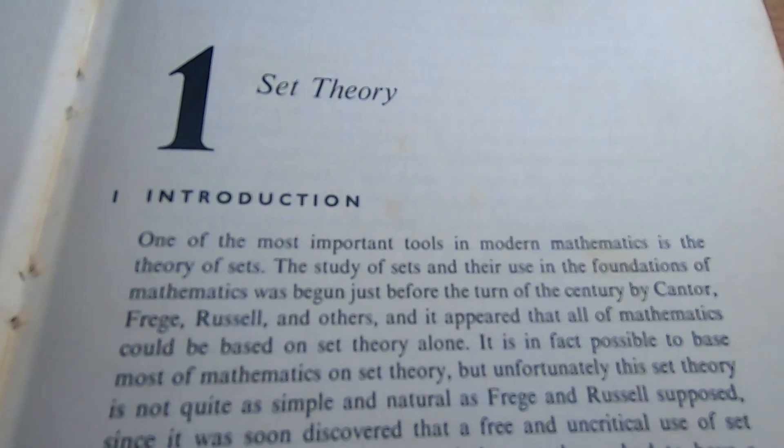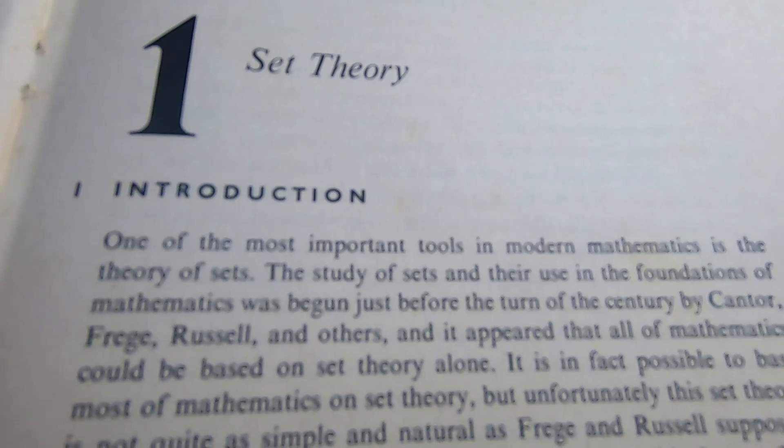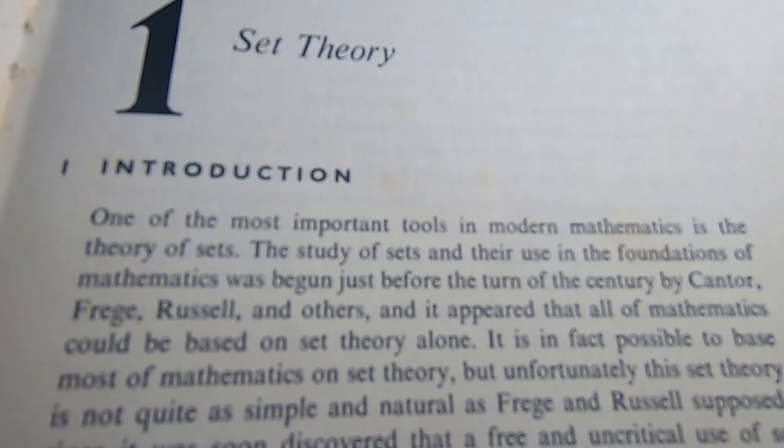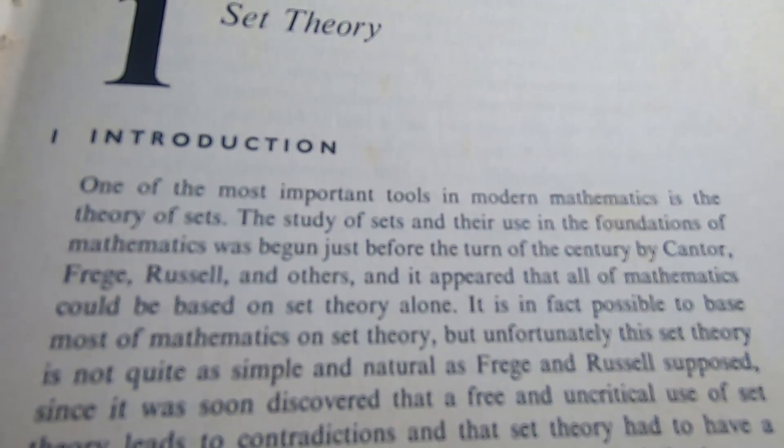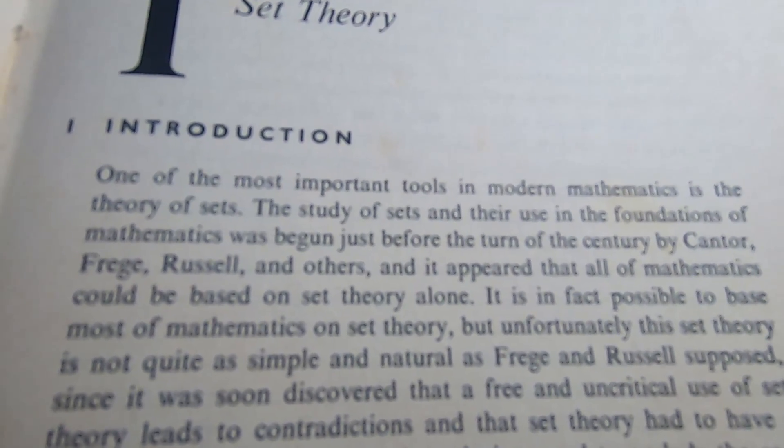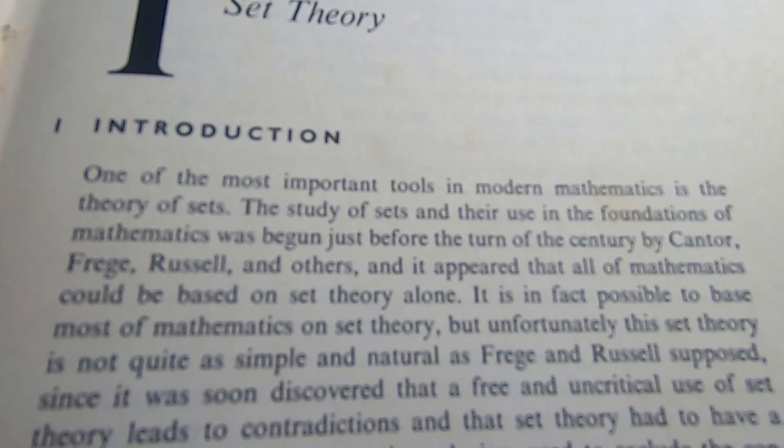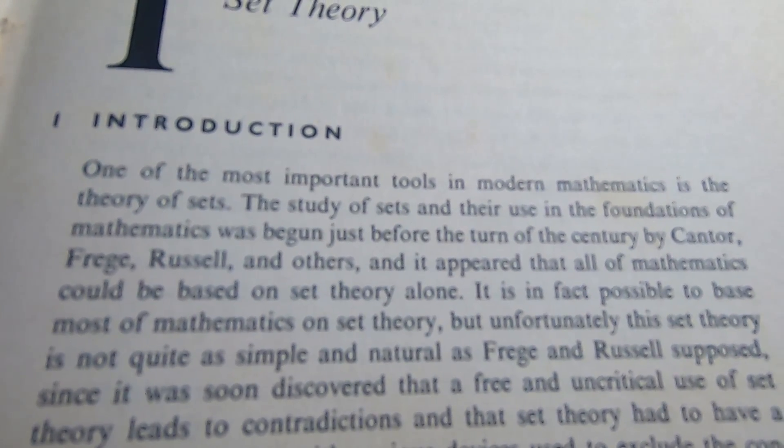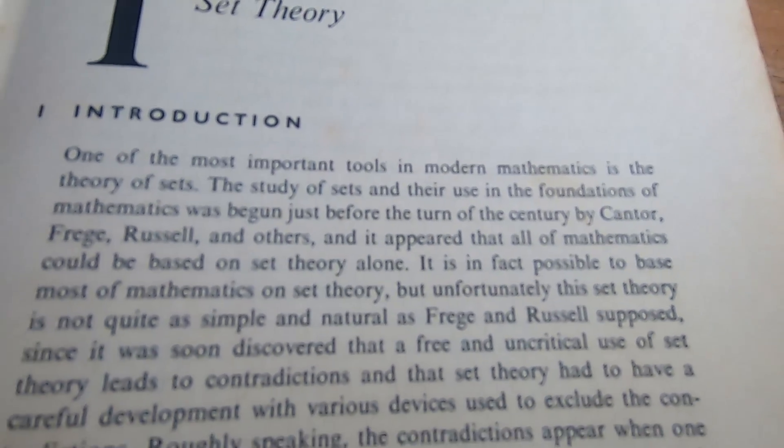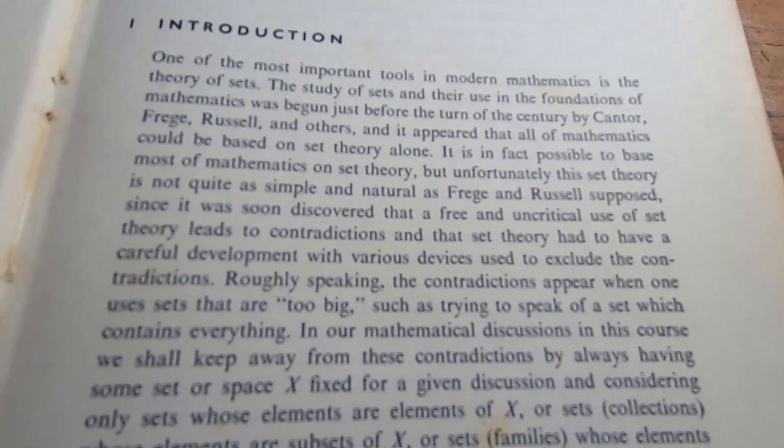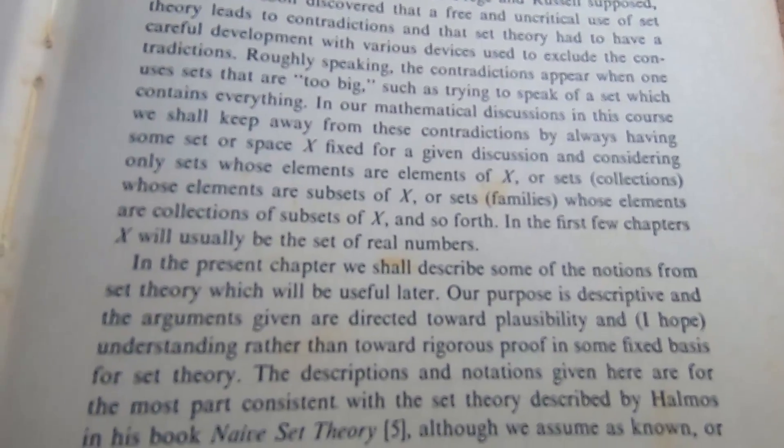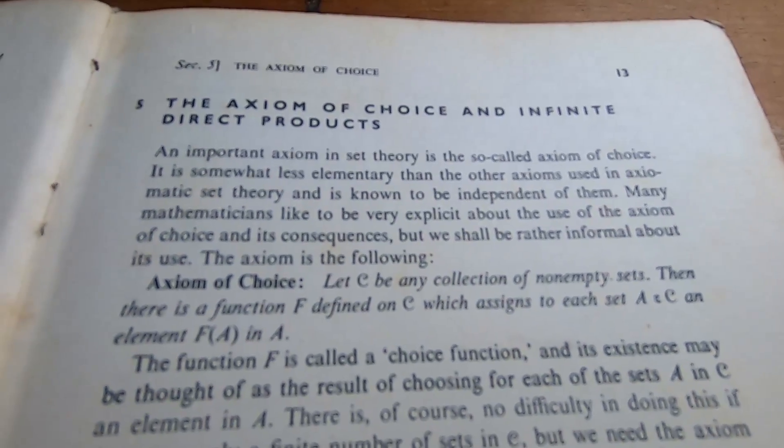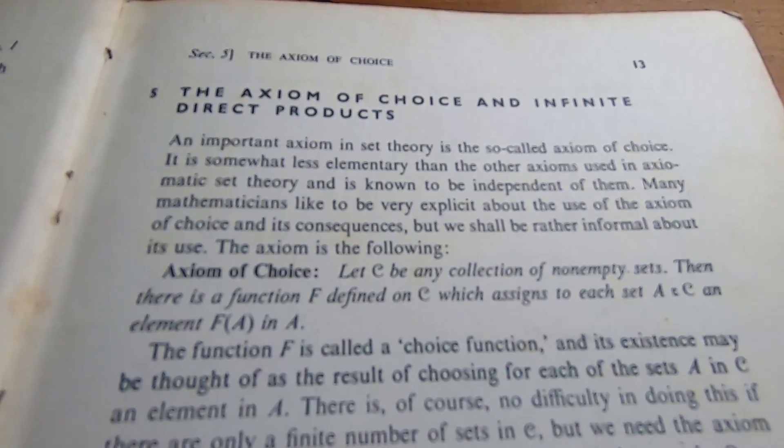This is the introduction. And this book reads quite well. I really like how it reads compared to some of the other measure theory books out there. It says, one of the most important tools in modern mathematics is the theory of sets. The study of sets and their use in the foundation of mathematics was begun just before the turn of the century by Cantor, Frege, I think that's Frege, Russell, and others. And it appeared that all of mathematics could be based on set theory alone. And it talks about some of the downfalls of set theory and how it really is not so simple. Even though it was intended to be simple, it ended up not being the case.